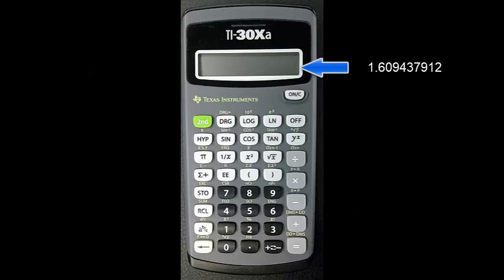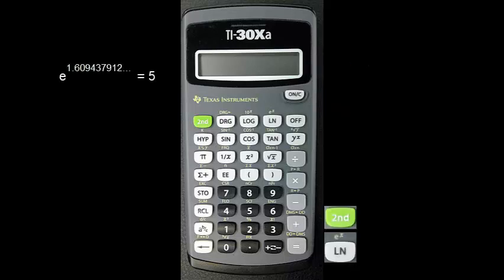Now, with that number still on the screen, let's calculate the antilogarithm of it. Press 2nd and ln. This raises e to the power 1.6094, etc. The answer should be 5, our original number.